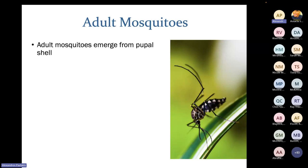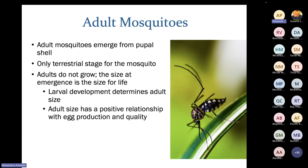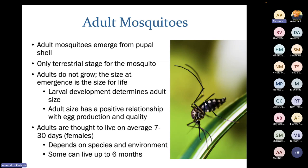Adults emerge from the pupal shell — the only terrestrial stage of the mosquito; everything else is aquatic. Adults do not grow, so the size they emerge at is their size for life. We get many calls about 'baby mosquitoes' that people want treated before they grow — the good news is they don't grow at all. Larval development and how much they eat determines adult size. Research shows adult size has a positive relationship with egg production quality — bigger adults lay more eggs and fly farther.